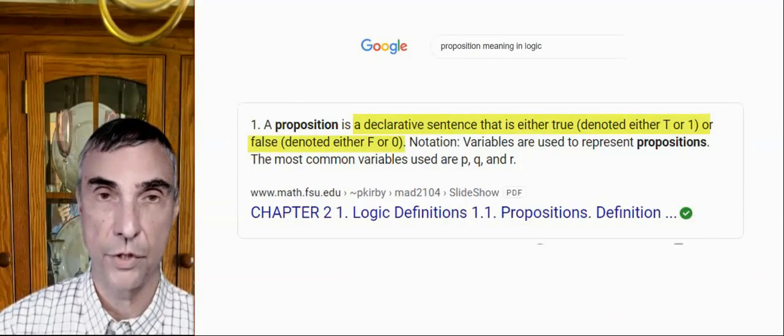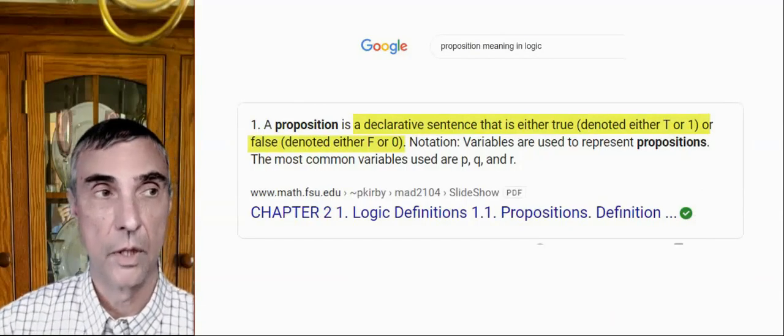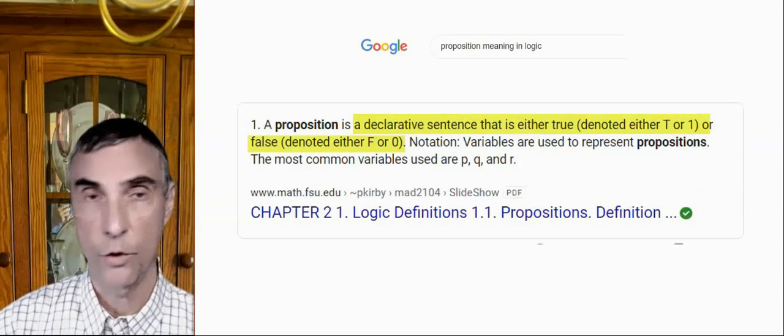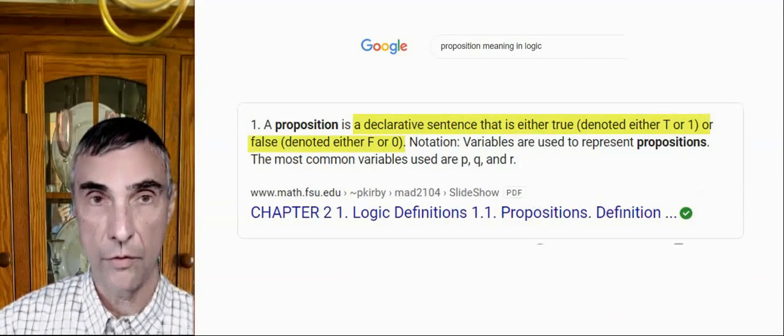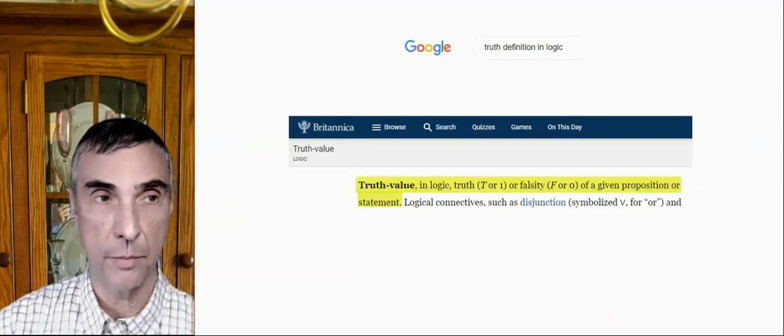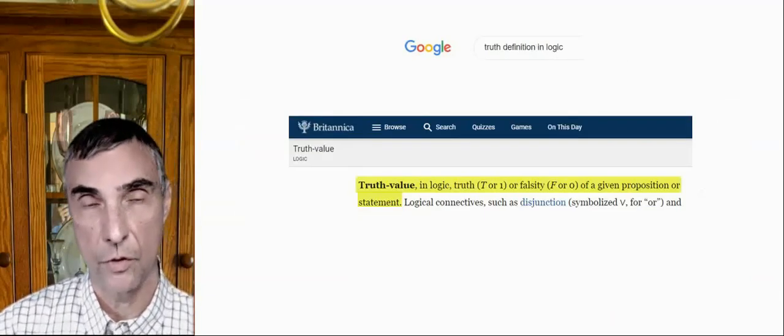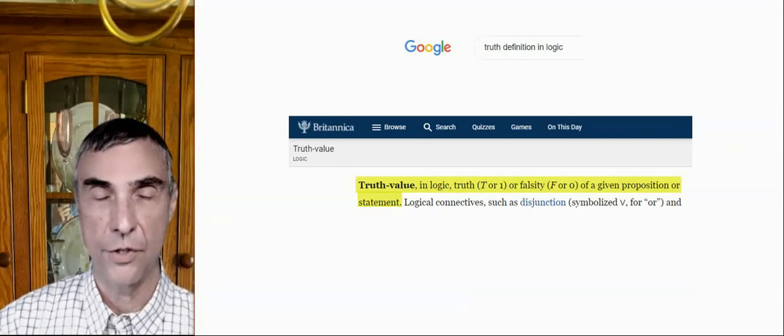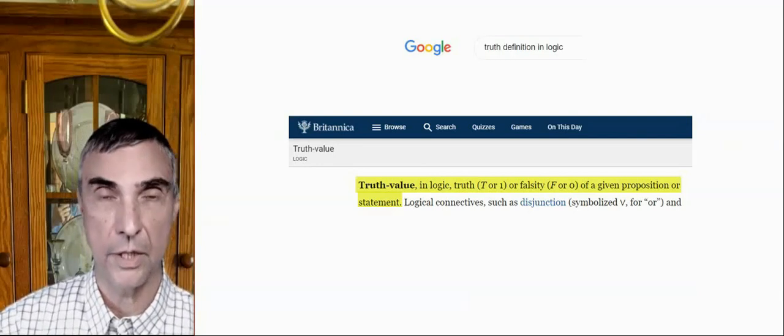In logic, we have propositions. Propositions are declarative sentences - today is Friday, two plus two is four - but not questions like what are we going to have for lunch. Truth is a property of propositions. Propositions are either true or false. With that definition of truth, it doesn't make much sense to say Jesus is the truth.